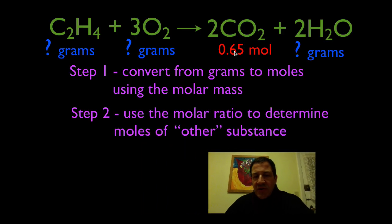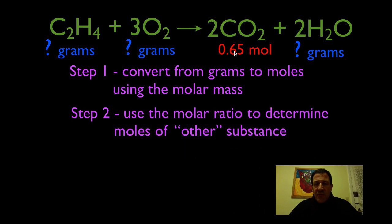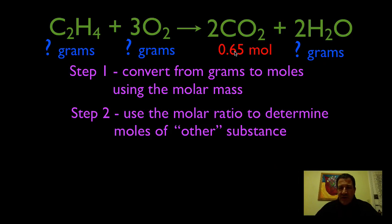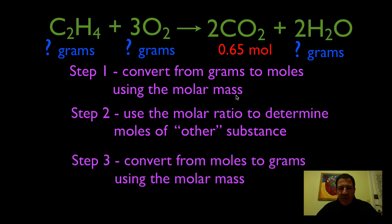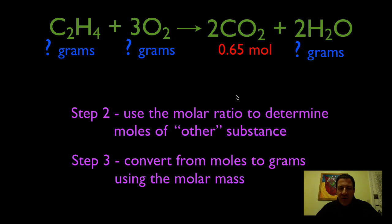Step two, which we're going to do first, is use the molar ratios to convert from the moles of CO2 to the moles of the other compounds or elements. The third step is to convert from moles to grams. So we're only going to use step two — the molar ratio — and step three, converting from moles to grams using the molar mass.